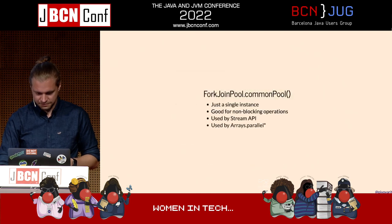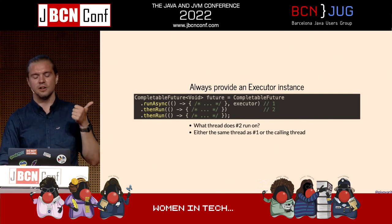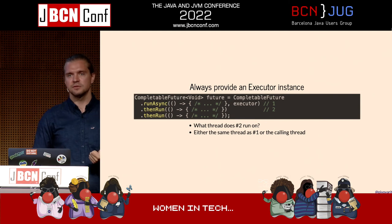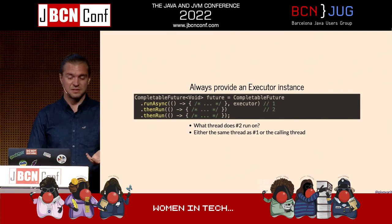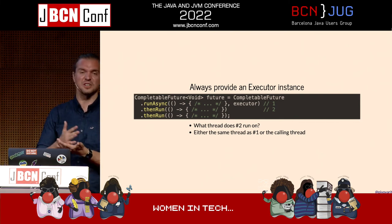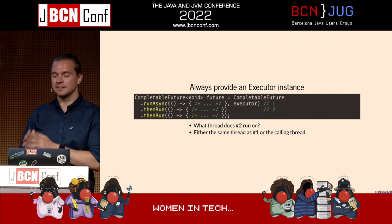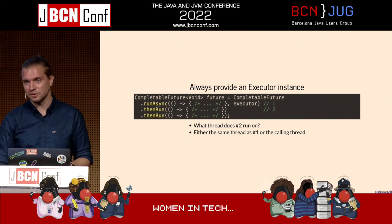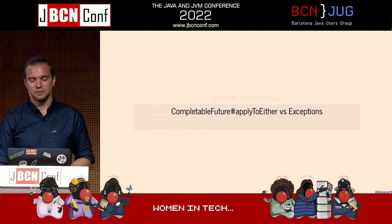The point is: always remember to provide your own ExecutorService to your CompletableFutures whenever you actually care about asynchrony. If you're running some basic operations — like receiving an integer and incrementing it — don't bother; it's okay to run without the async postfix. But if those are blocking operations, think carefully about what to do.